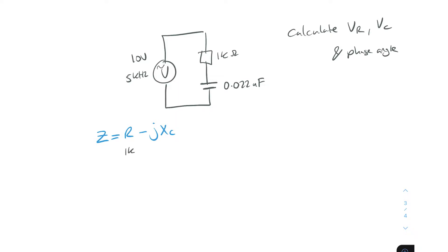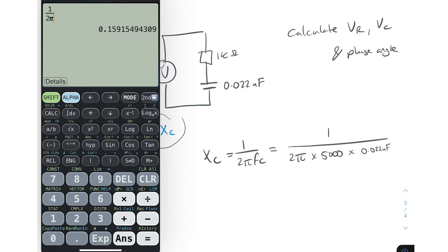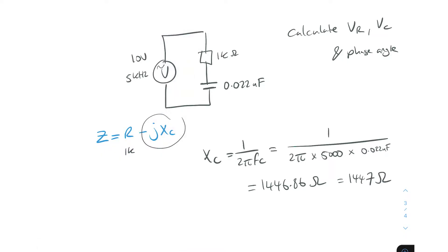Our resistor value is 1kΩ, so now let's find Xc. We know Xc = 1 / (2πfc), which is 1 over 2π times 5000 times 0.022 microfarads. Pulling up the calculator, that gives us 1446.86 ohms — so we'll call that 1447 ohms for our capacitor.